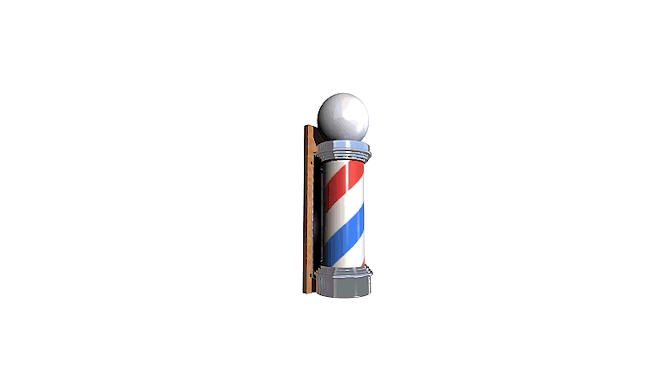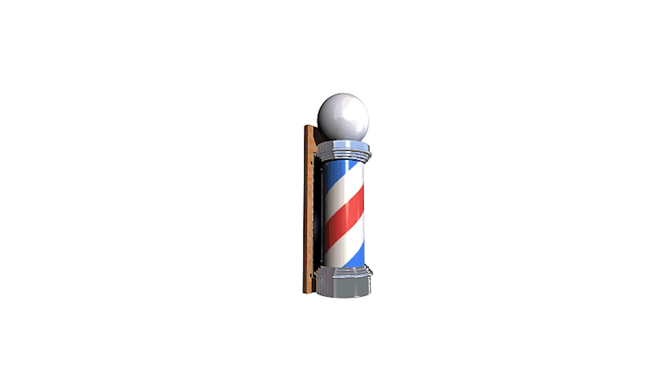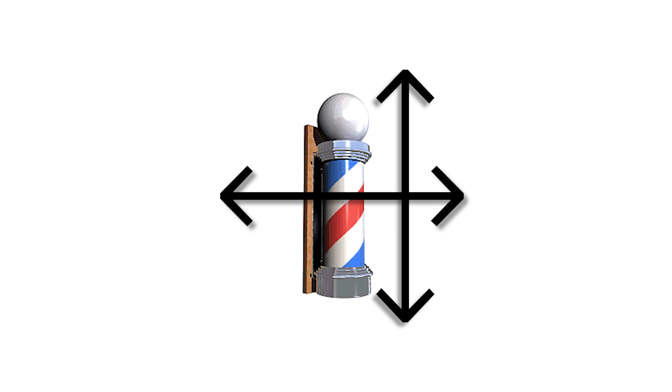Barber Pole Illusion. Did you know that the diagonal lines in a barber pole actually rotate horizontally and don't go up or down? The vertical movement is just an optical illusion.